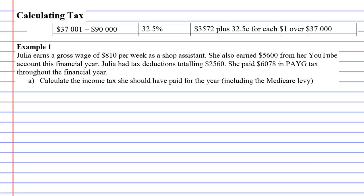Let's focus on question A — we're going to calculate the income tax she should have paid for the year. What we'll do first is find her gross income. Gross income, that's without any deductions, was eight hundred and ten dollars per week.